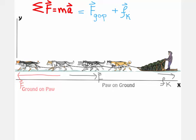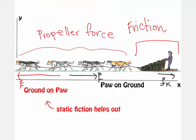So, F ground on paw is the propulsion force in the form of static friction that is helping our dogs move forward. The net force would be ground on paw and the kinetic friction by the sled.